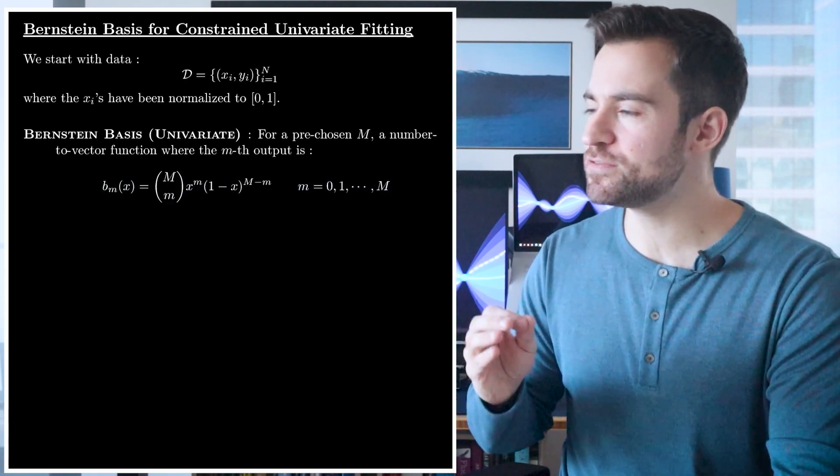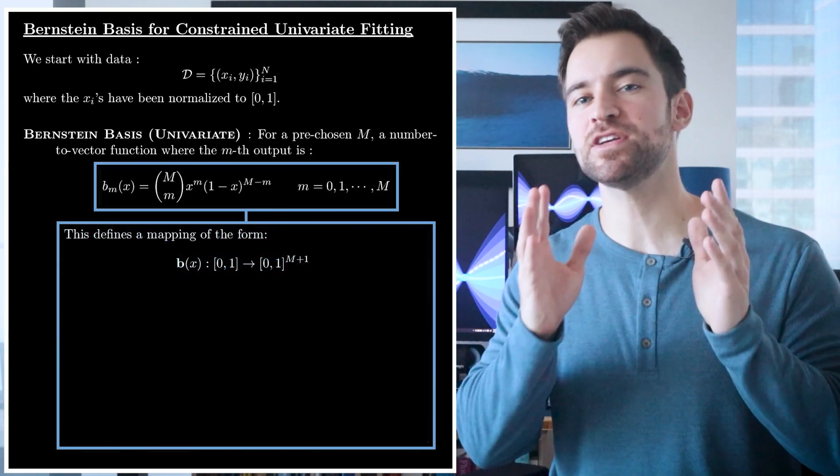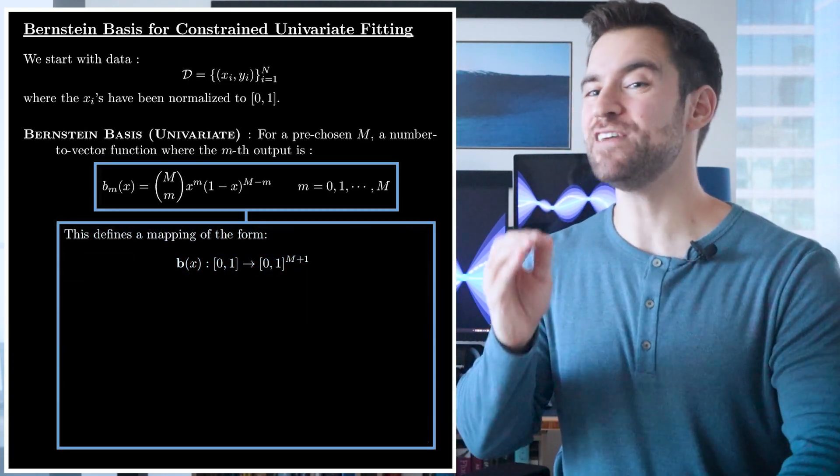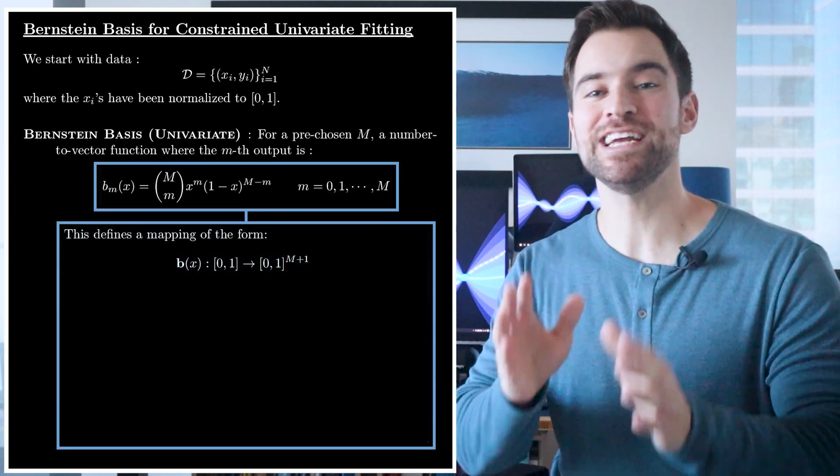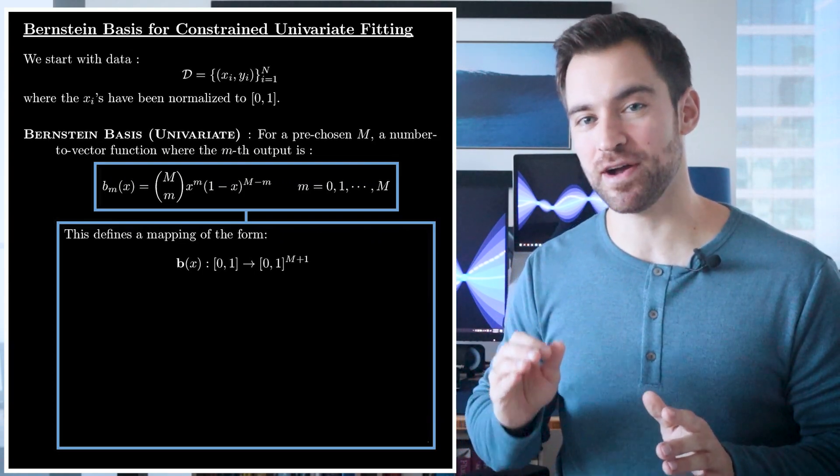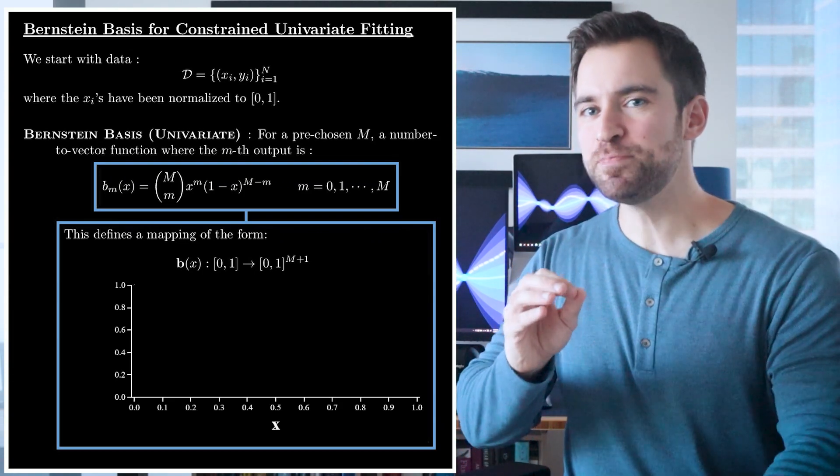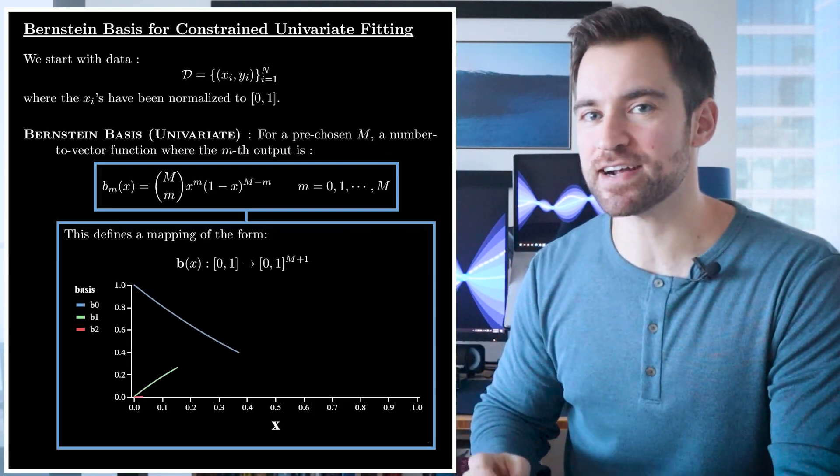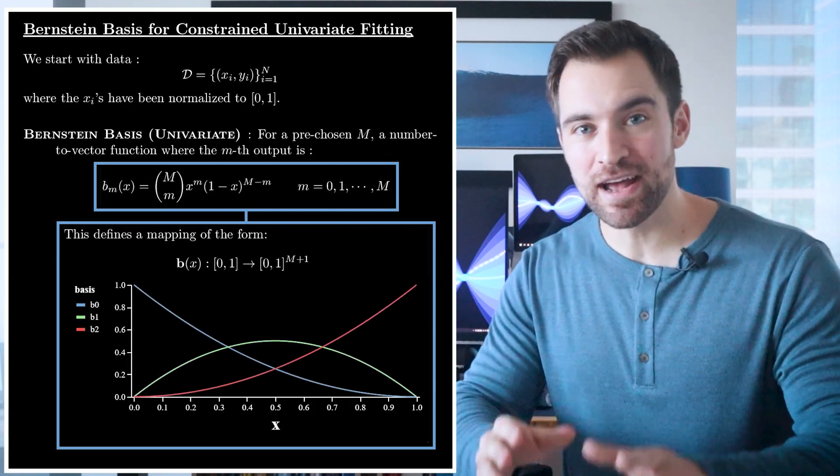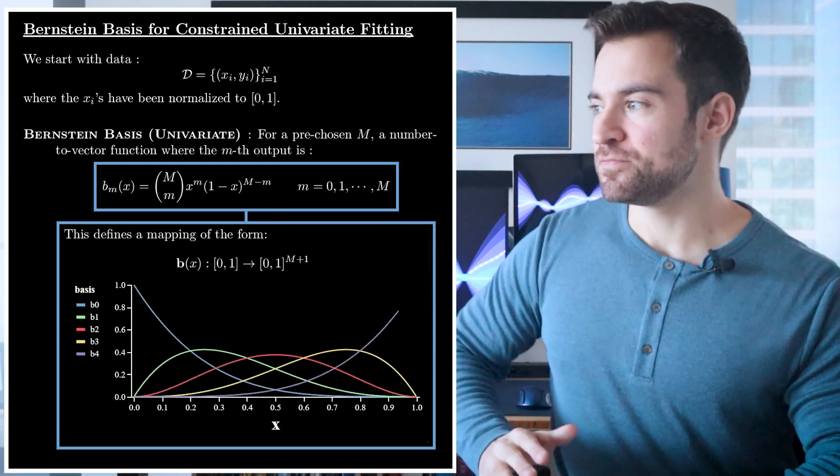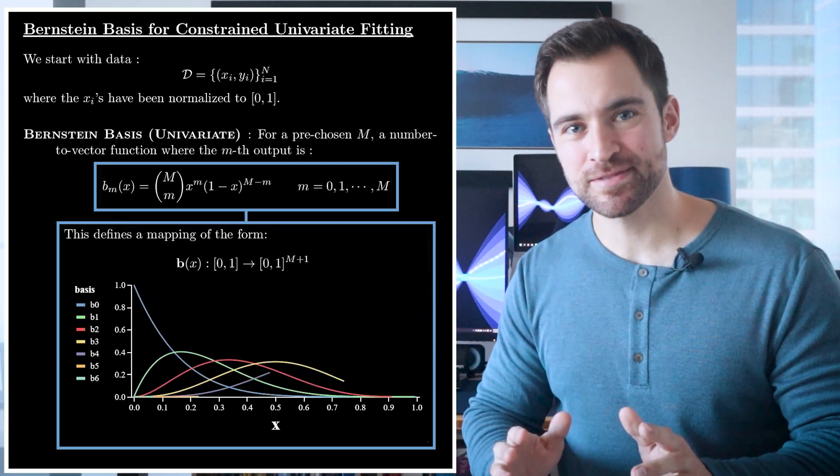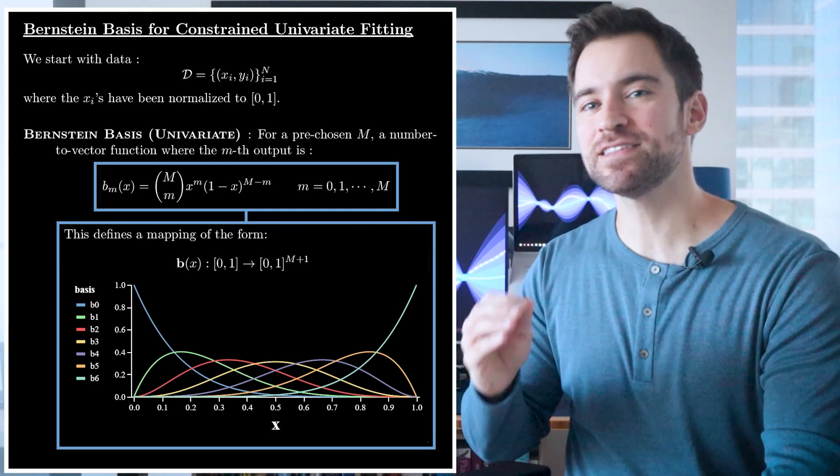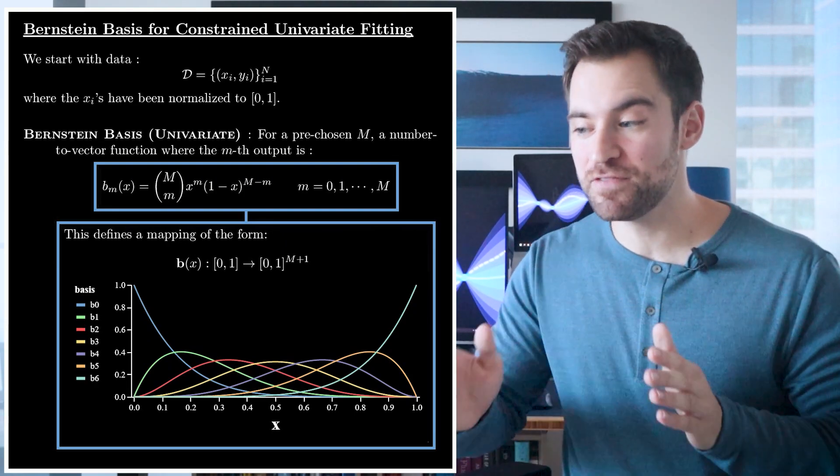It turns out, if you combine all these functions, you get something which maps a number between zero and one to a vector of length m plus one, where each element is also between zero and one. To picture that, let's pick m equal to two and plot each basis function as a function of x. Okay, how about m equal to four? And m equal to six?